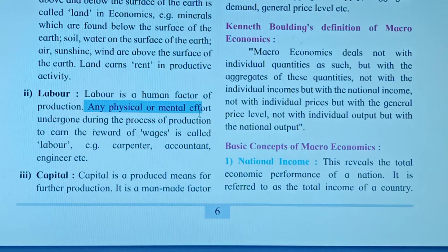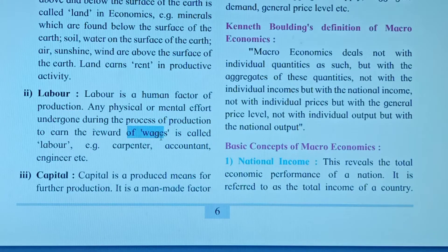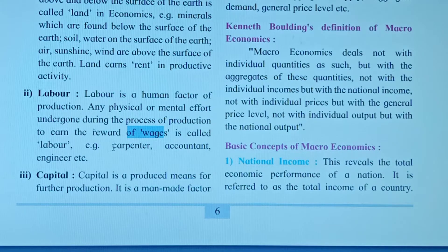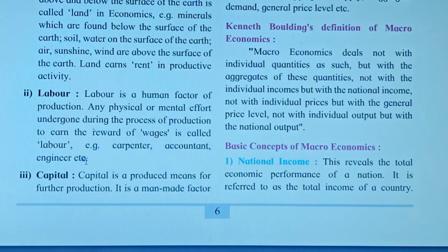Any physical or mental effort undergone during the process of production to earn the reward of wages is called labor. We pay wages to a laborer as a reward for the physical and mental effort given to accomplish production work. For example, a carpenter furnishes houses and makes furniture, an accountant maintains books of account, and an engineer sets up machinery and equipment — all are paid wages or salary by the entrepreneur.